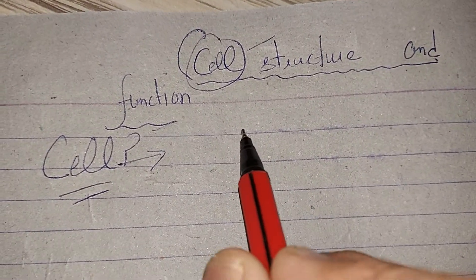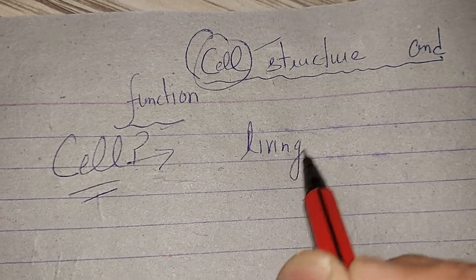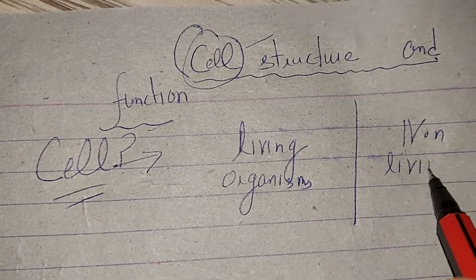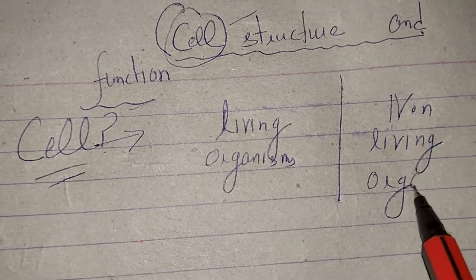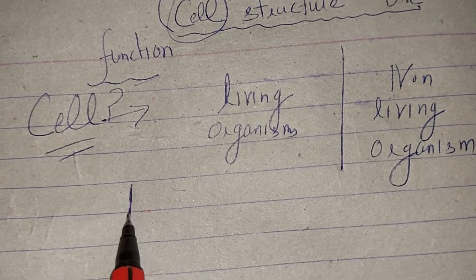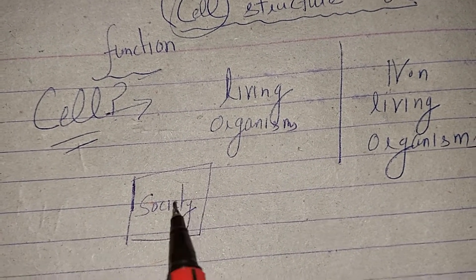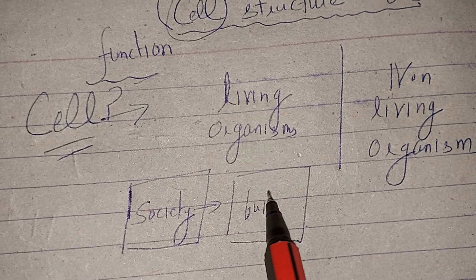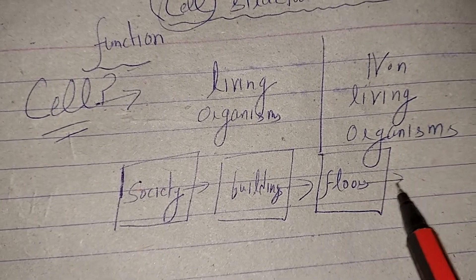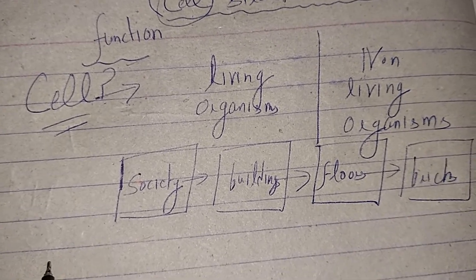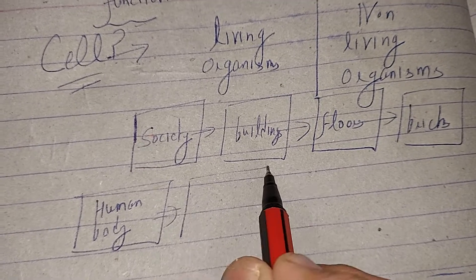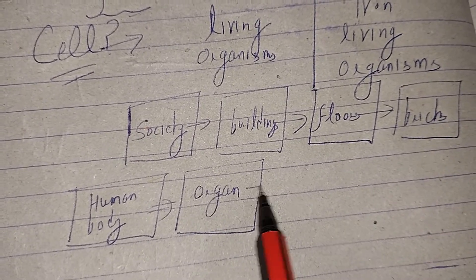There are two types of living organisms on earth — living organisms and non-living organisms. Like we are saying there is a society. In society there are so many buildings, and each building has so many floors, and these floors have so many bricks.